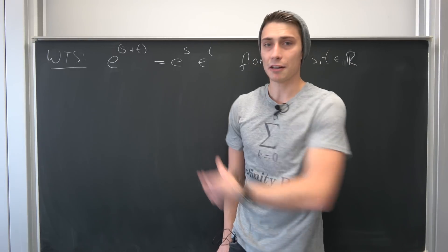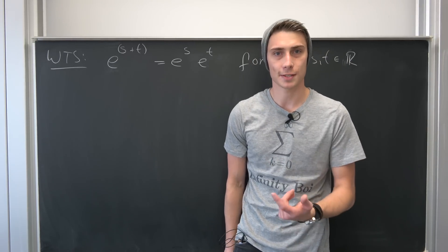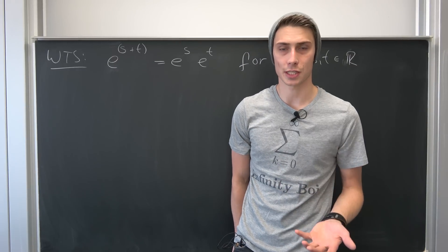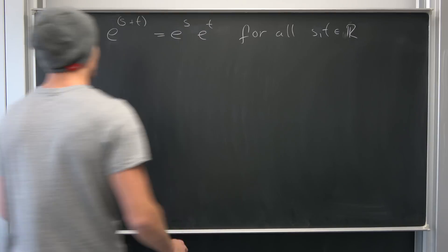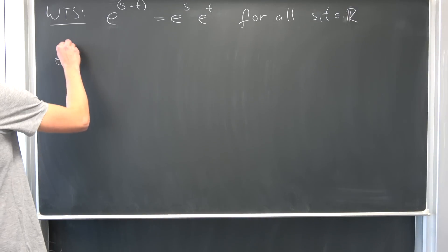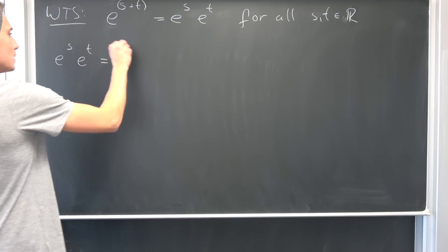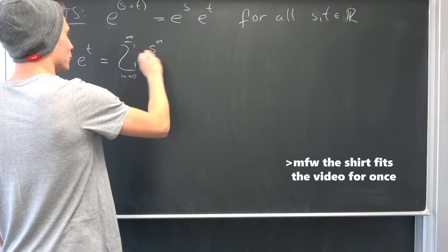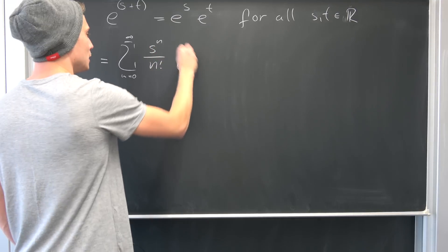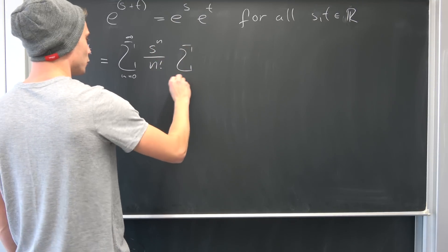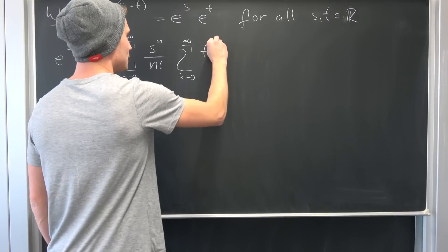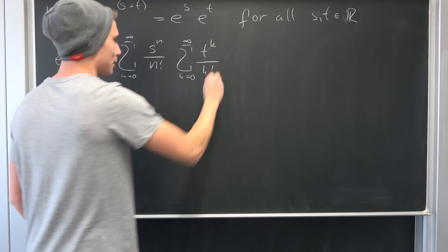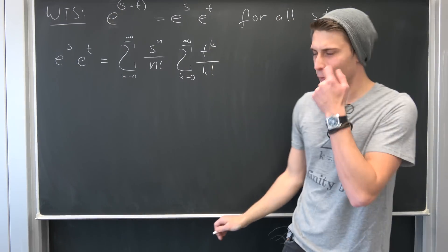For this I would like to take a look at the right-hand side using the pure definition of the exponential function in terms of its Taylor series / Maclaurin series expansion. We know that e to the s times e to the t is nothing but an infinite sum from n equals zero to infinity of s to the nth power over n factorial, times a sum from k equals zero to infinity of t to the kth power over k factorial. We now have something really ugly: the product of two sums.